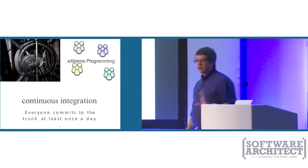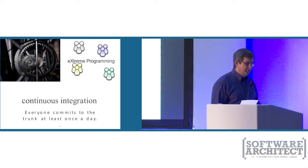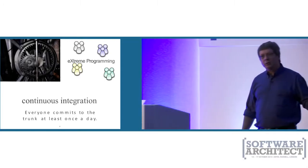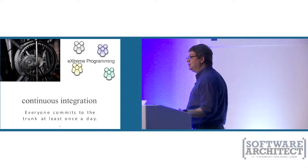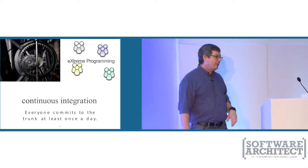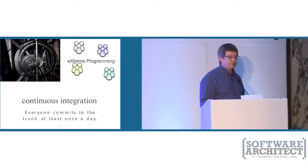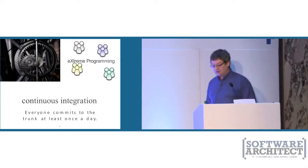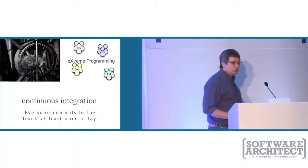Continuous integration was founded by the extreme programming guys. Their philosophy was: take all the things we know have worked well in the past and push them as far to the extreme as possible. Integration was one of those things — on projects where we were eager with integration, we had far fewer integration-based headaches. The most extreme version is continuous integration, where everybody commits to the mainline at least once a day. We very quickly built machinery to do this for us, and now we equate CI with that machinery.